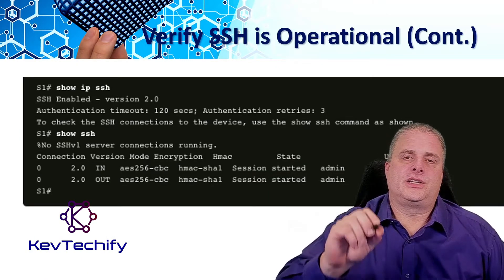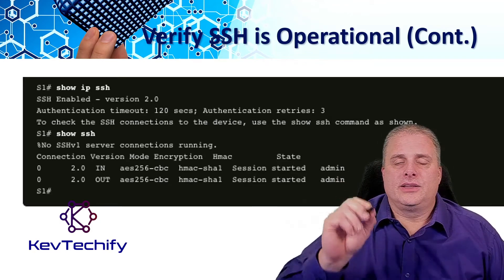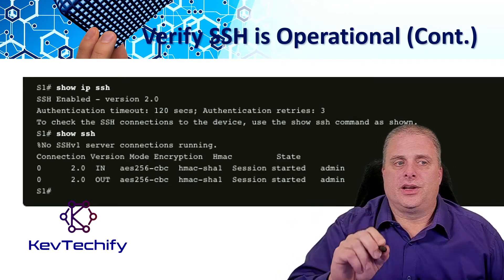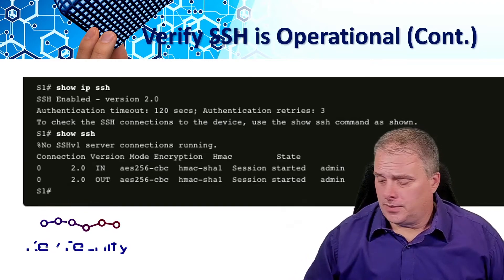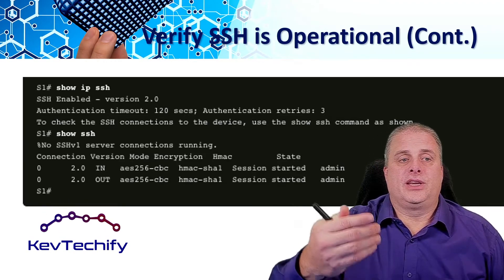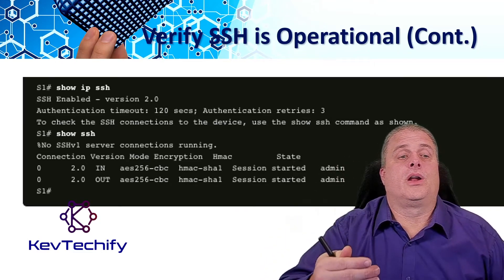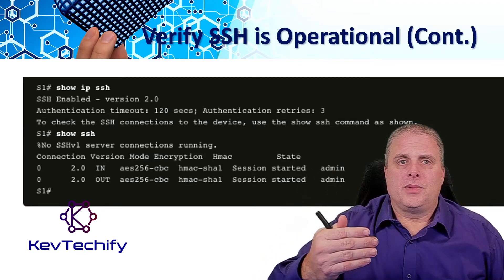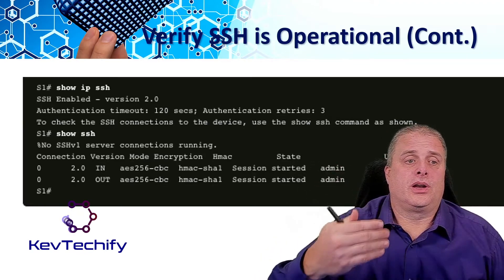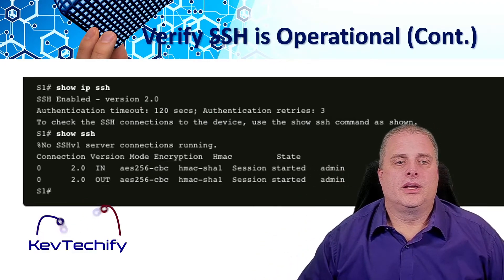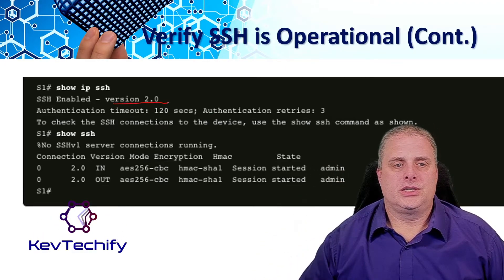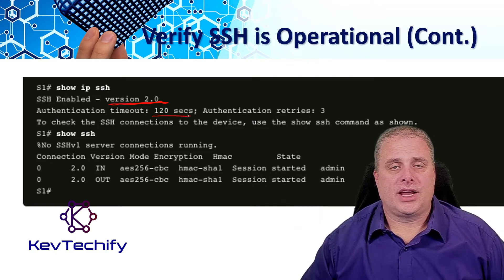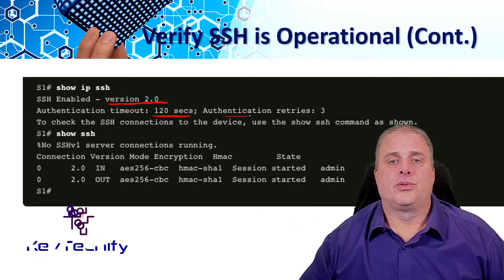Another way to verify SSH is up and running is on the device where you configured it — enter the show ip ssh command. If it gives you information about SSH, that means it's up and running. If it says it's an unrecognized command or hasn't been configured yet, it's not running. If it is up, it'll list out the version — here we're running SSH version 2 — the authentication timeout, which is 120 seconds, and that you get up to three failed attempts.